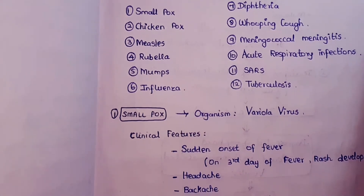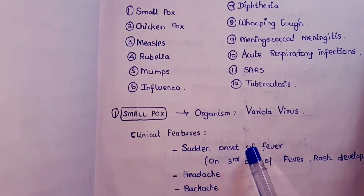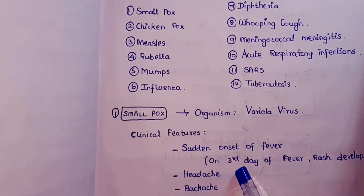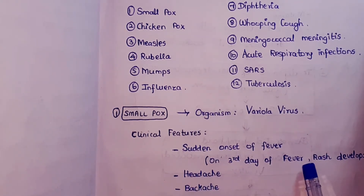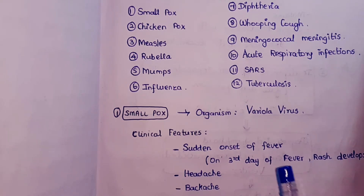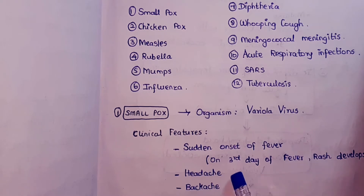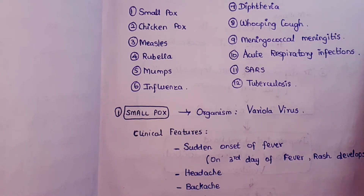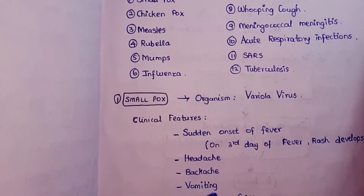The clinical features of smallpox include sudden onset of fever. On the third day of fever, rashes develop — this is different from chickenpox, where fever and rashes develop at the same time. Other features include headache, backache, and vomiting, which are common to both smallpox and chickenpox.